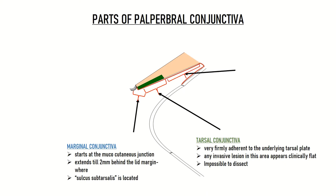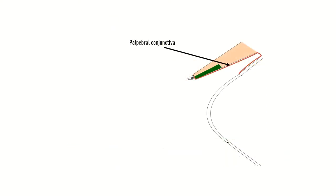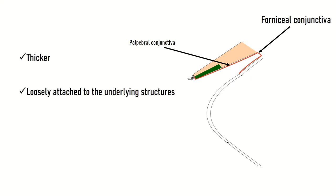The third part of the palpebral conjunctiva is known as the orbital conjunctiva. Unlike the tarsal conjunctiva, it is relatively loosely attached to the underlying tissues. The palpebral conjunctiva further continues as conjunctiva of the fornix. The fornix in this region is thicker and also loosely attached to the underlying structures, which allows for free movement of the globe.